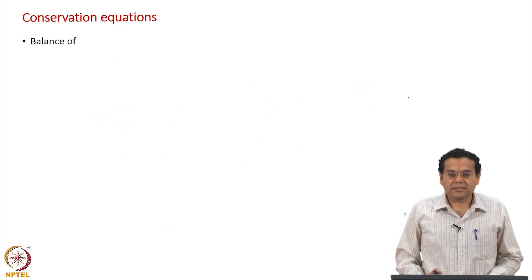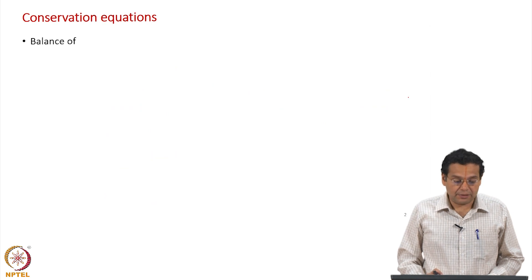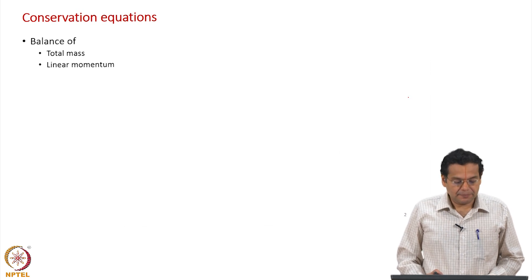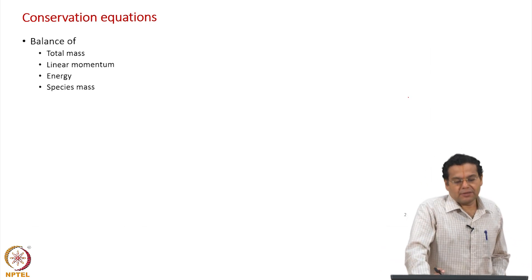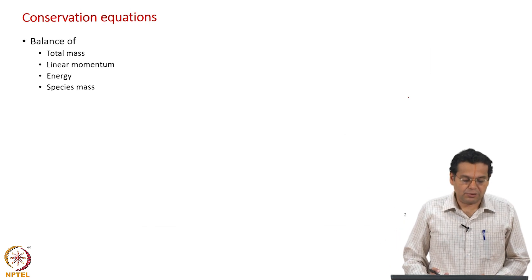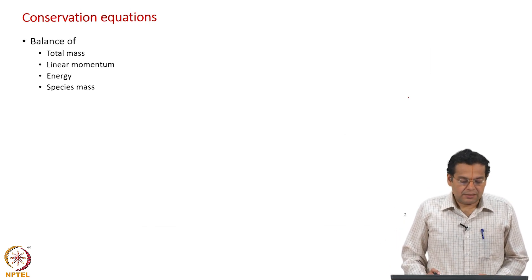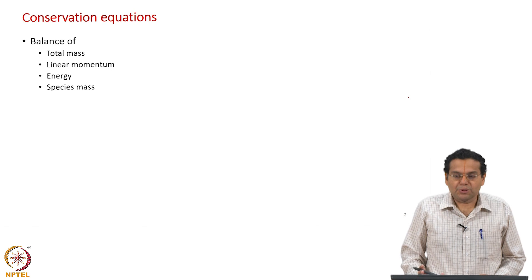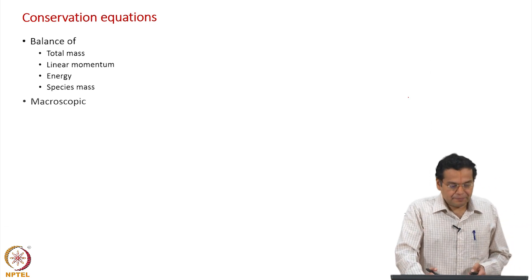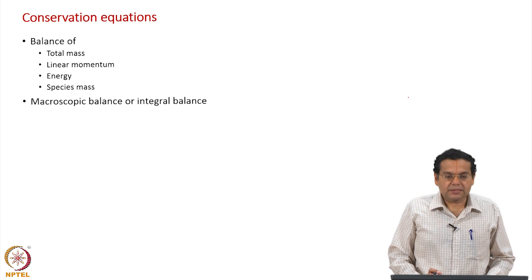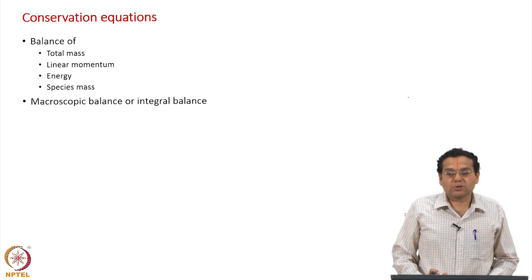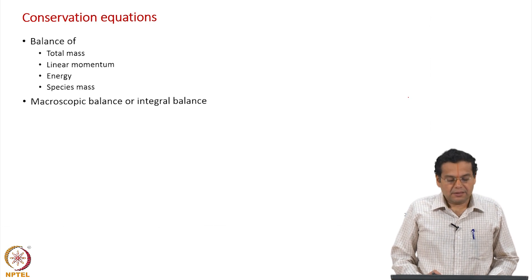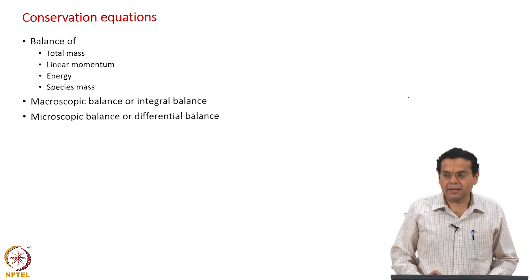As we have seen, we are going to discuss and derive the balance of total mass, linear momentum, energy, and species mass. When we say mass, we clearly distinguish as total mass and species mass. Species mass comes much later in the course, so until then mass and total mass are equivalent.